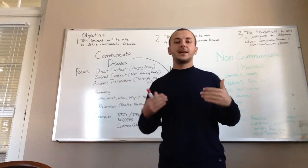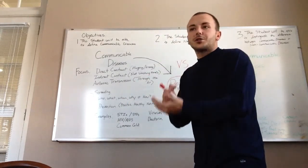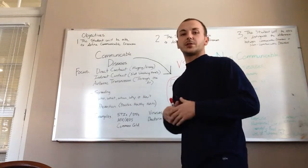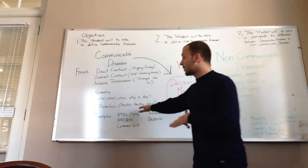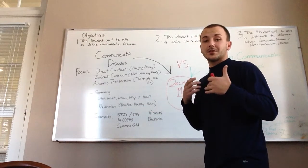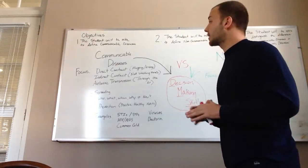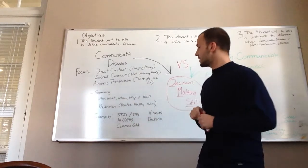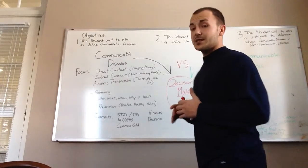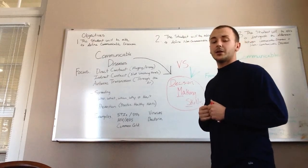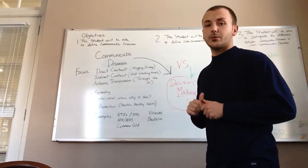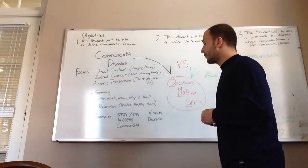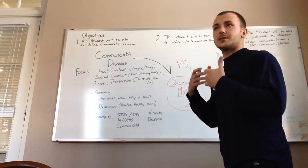Prevention is strictly about practicing positive healthy habits and getting into a daily routine — washing your hands thoroughly after using the restroom, before preparing food, and before going out for the day. Really being strict on yourself and understanding that you are at risk for any type of bacteria or communicable disease, whether contacted directly, indirectly, or through airborne transmission. Examples of communicable diseases include STIs — sexually transmitted infections — which are very dangerous to long-term health.